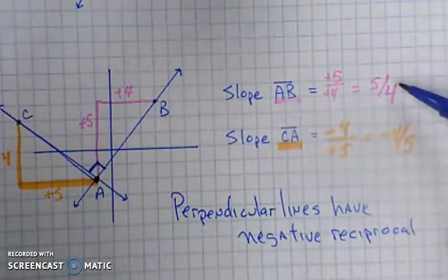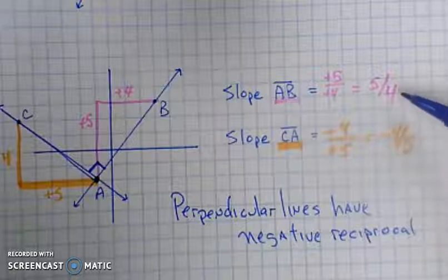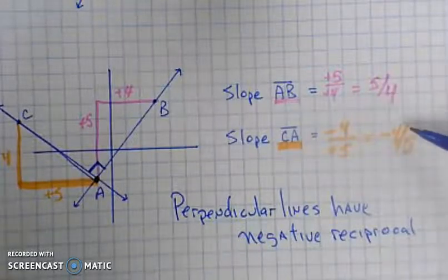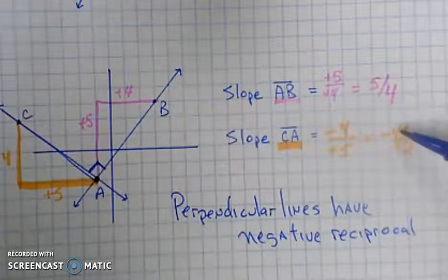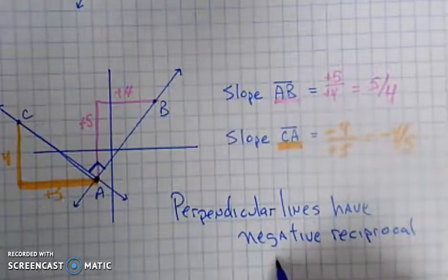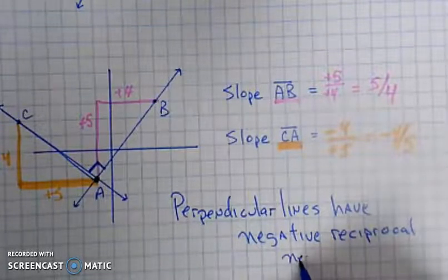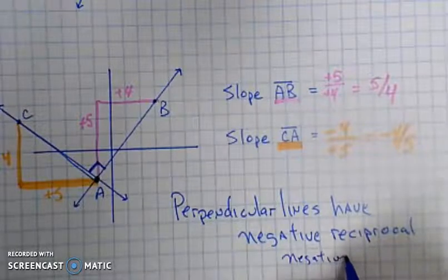In other words, if one is positive, the other one is negative. And then you flip the numerator and the denominator's change spots. So another way of calling that is a negative flip.